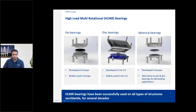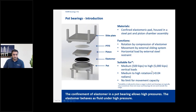Generally, there are three types of HLMR bearings: pot, disc, and spherical. Pot bearings were developed in Europe and are widely used there, in Asia, and globally. In the US, disc bearings are more common as they were developed here — it's a market preference. Both are considered similar in capabilities and quite interchangeable. When demands are more challenging, such as very high rotations, spherical bearings make more sense. We'll detail each one including use cases, benefits, and limitations.